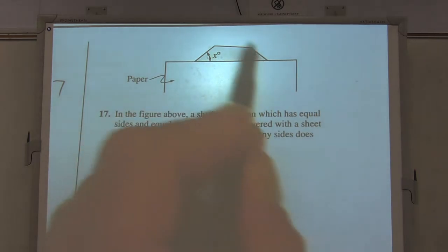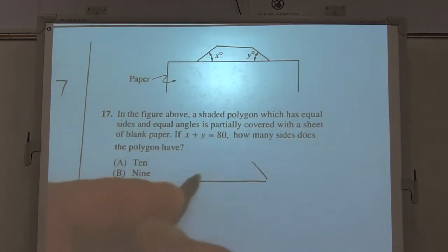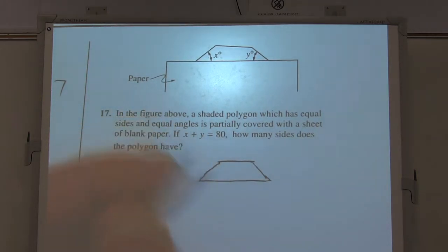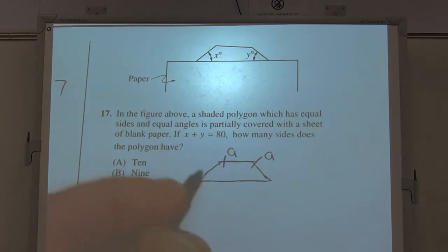I think what I'm going to do is just deal with this shaded polygon right here. So this guy right here, just the shaded guy. Now it says it's equilateral and equiangular because all sides are equal and all angles are equal. So I'm going to call that angle angle A, which means this angle is angle A. Now here's my x and y right here, x and y.